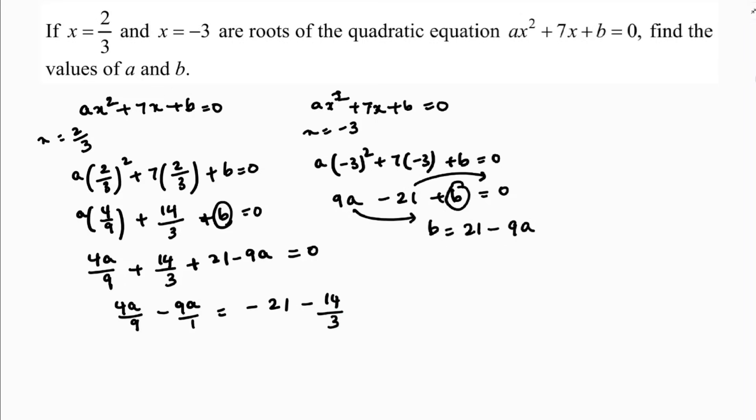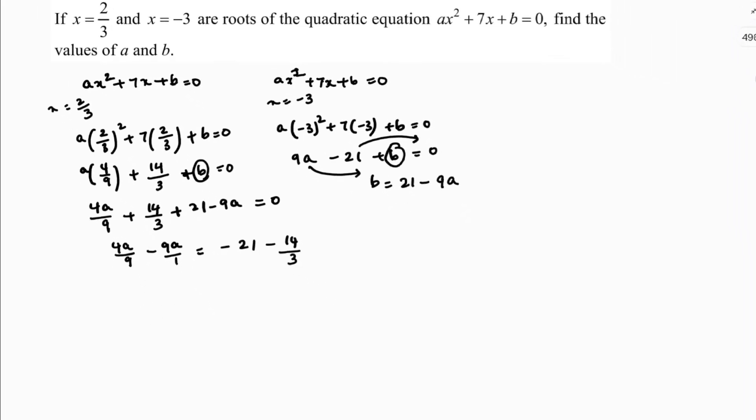Next step here, LCM is 9. So, 4a, here I need to multiply 9, minus 81a, here LCM is 3, minus 63, minus 14. So, here it is by 1. So, I need to multiply 3. 4 minus 81 is minus 77a by 9. I will write here, minus 63 minus 14 is minus 77 by 3.